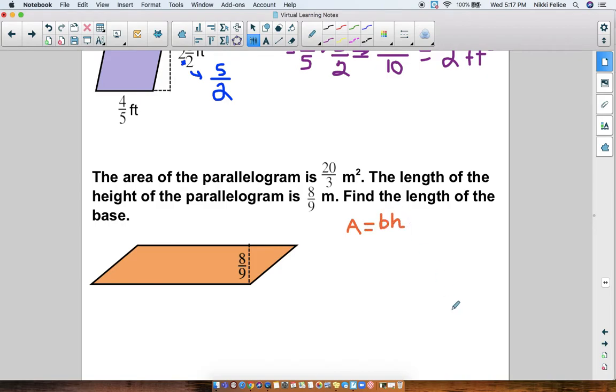Now I'm going to plug in what I have, and what I have is the area and the height. So I'm going to plug those in. Area and height, I have them. The area is 20 over 3. The base, I don't know yet, and the height is 8 over 9. So now we have 20 over 3 equals base times 8 ninths.